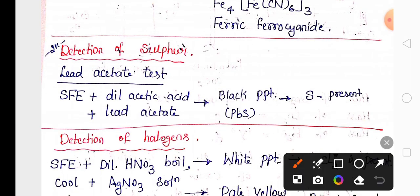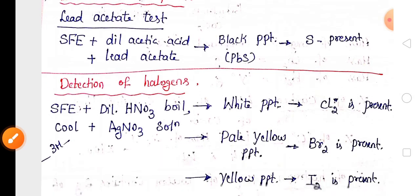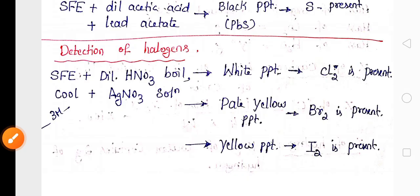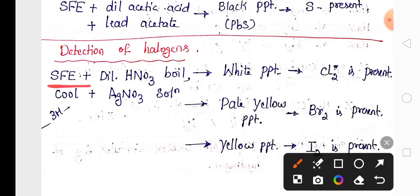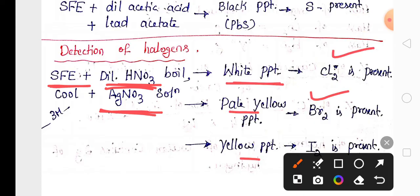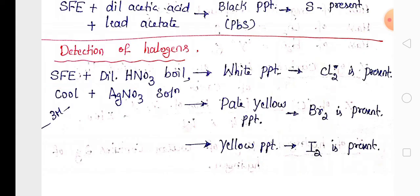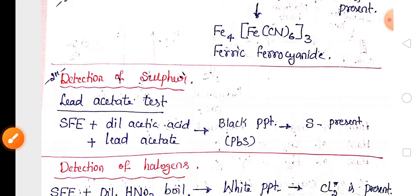For the detection of sulfur, add acetic acid and lead acetate to the sodium fusion extract to get a black PbS precipitate. To detect halogens, add nitric acid and boil, then add silver nitrate. A white precipitate indicates chlorine, pale yellow indicates bromine, and yellow indicates iodine. Very important for two or three marks.